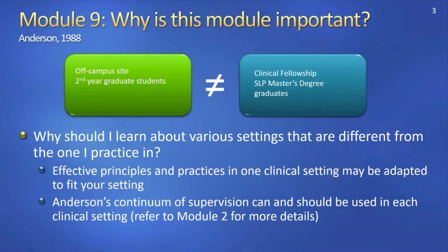Depending on the clinical environment in which you provide services or the types of students you wish to supervise, you might be wondering what there is to gain from learning about other settings. For example, if you work in an off-campus site supervising second-year graduate students, you might question the benefit of reviewing best practices for the clinical fellowship. Second-year students and CFs have different levels of clinical experience, and the expectations and objectives of each placement are quite different. What will hopefully become apparent as we discuss each setting is that there are countless universal concepts and principles that can be adapted to fit your unique supervisory practice, alongside Anderson's Continuum model of supervision.